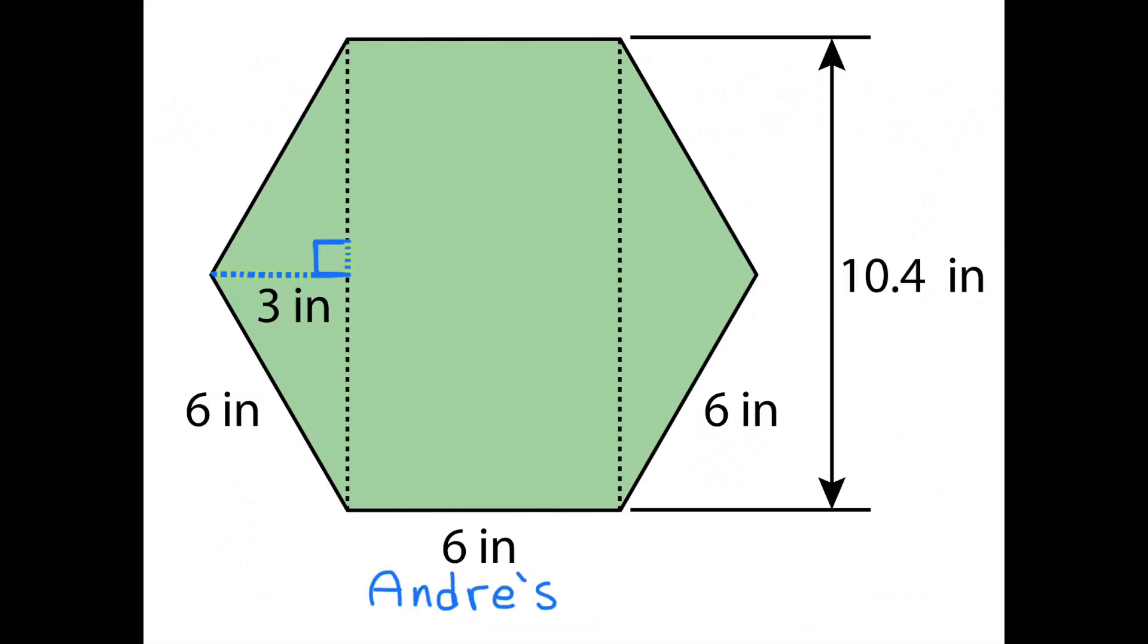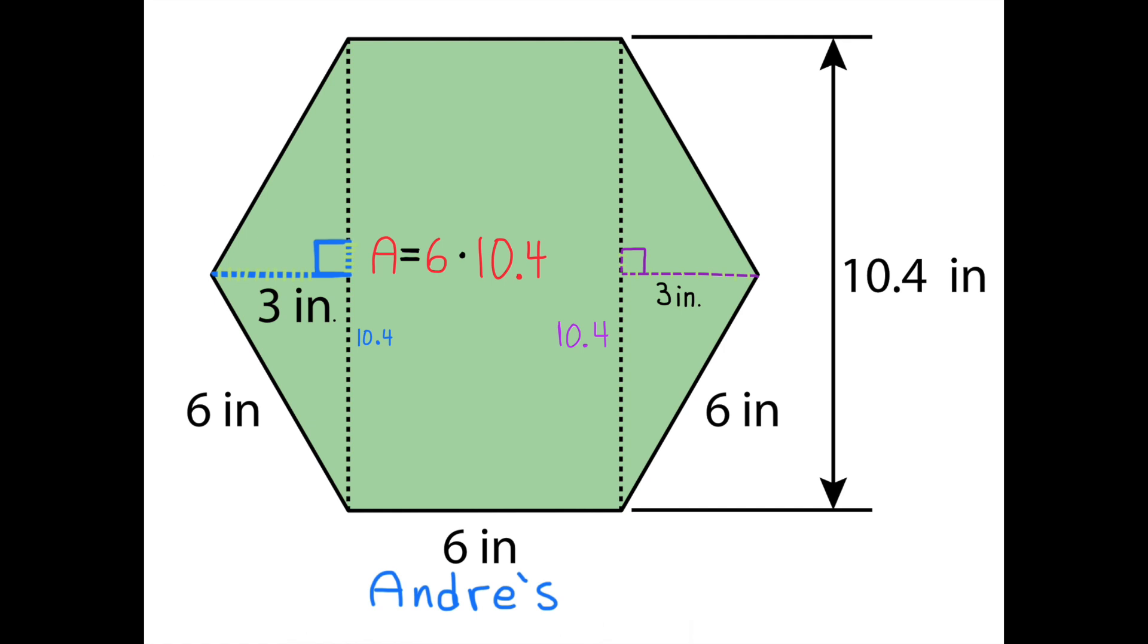Andre decomposed his hexagon to have two triangles and a rectangle. Each triangle has a height of 3 inches and a base of 10.4 inches. The rectangle has a base of 6 inches and a height of 10.4 inches. To figure out the area of the rectangle, we would multiply base times height, or 6 times 10.4.